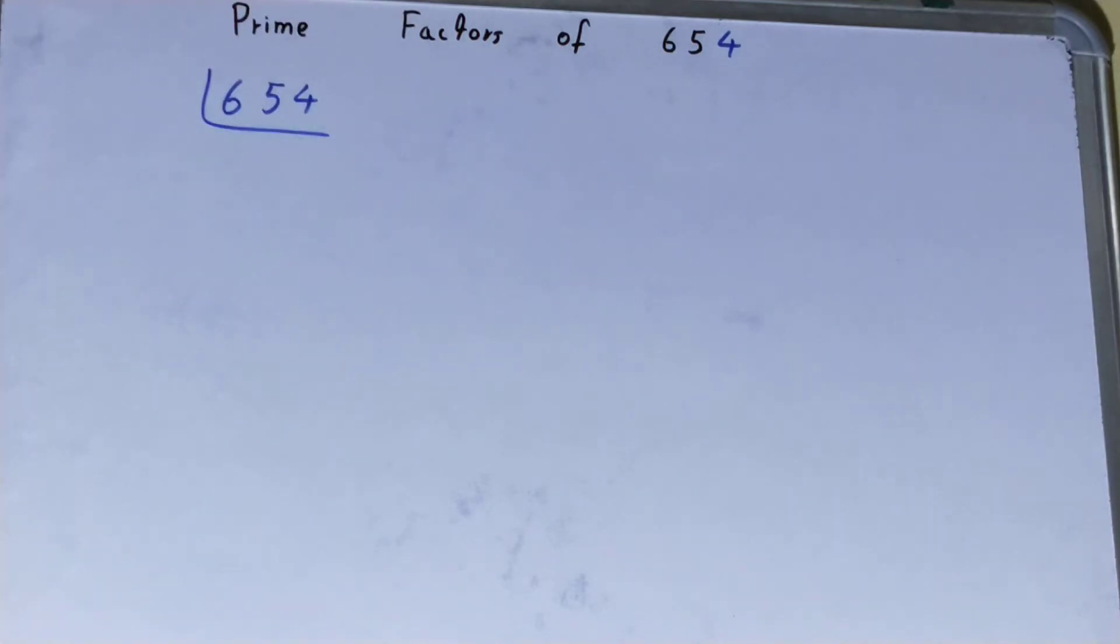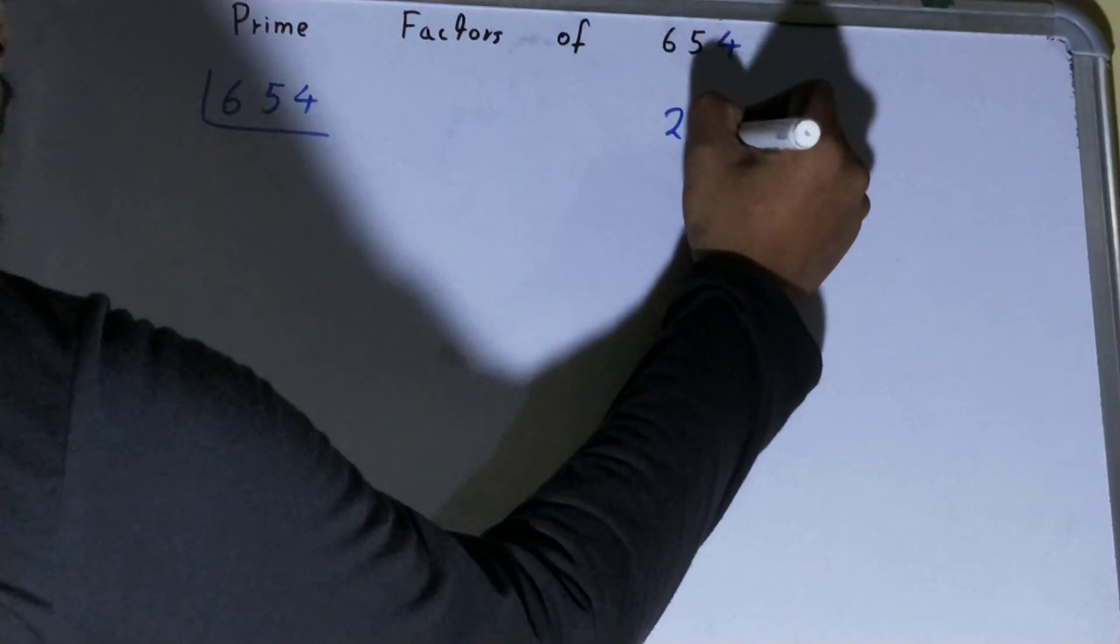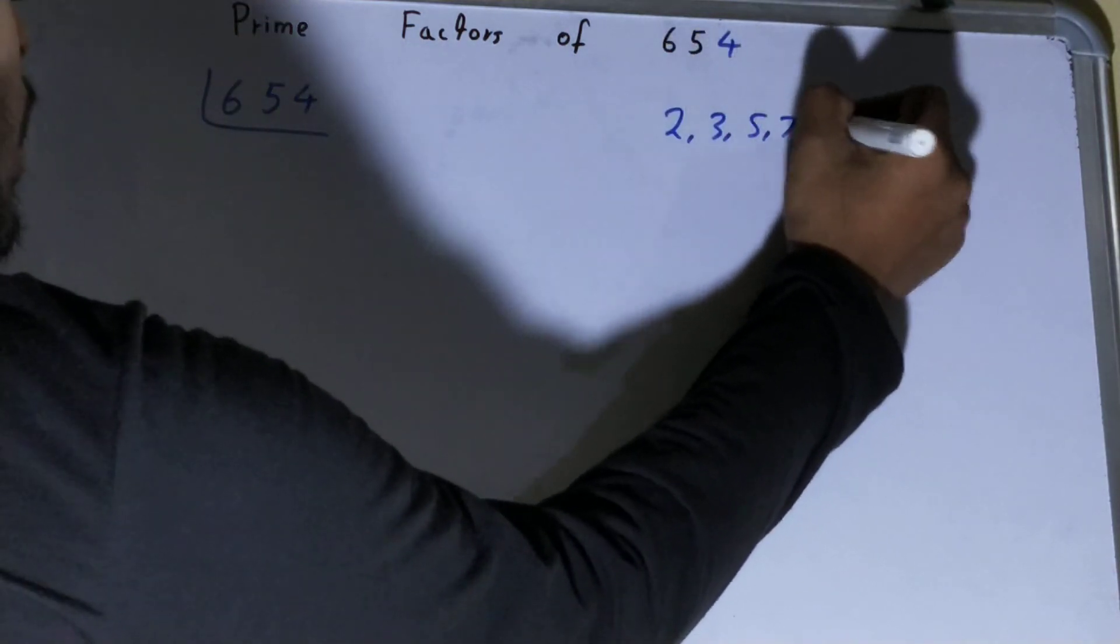Before solving this any further, you must have an idea about what prime numbers are. Prime numbers are numbers that are divisible by one and the number itself, like two, three, five, seven, and so on.